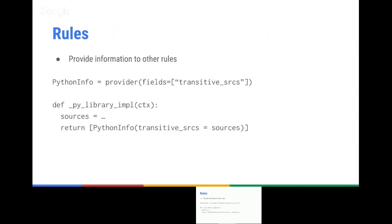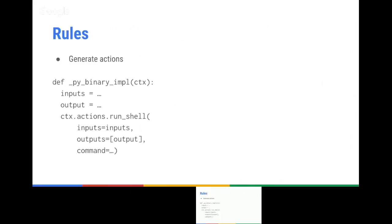In your implementation function, you return the list of everything your function provides. Once you have your interface and your providers, you can generate actions. In this example, we just run a shell command. That's really what a rule has to do: communicate with other rules and generate actions.